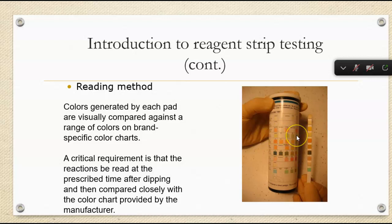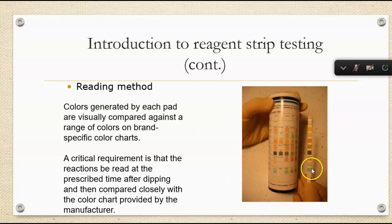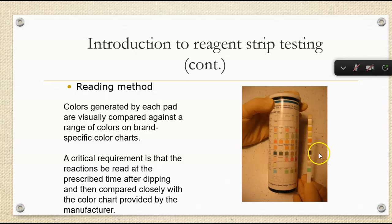Any green color for this strip would indicate protein is present; any changes to green or brown would indicate glucose. We have to read these results at the exact same time as the chart because of the limitations and effects of air and temperature on some of these reactions. These are enzymatic reactions — especially glucose oxidase and leukocyte esterase — and they are directly impacted by changes in temperature and changes in pH.